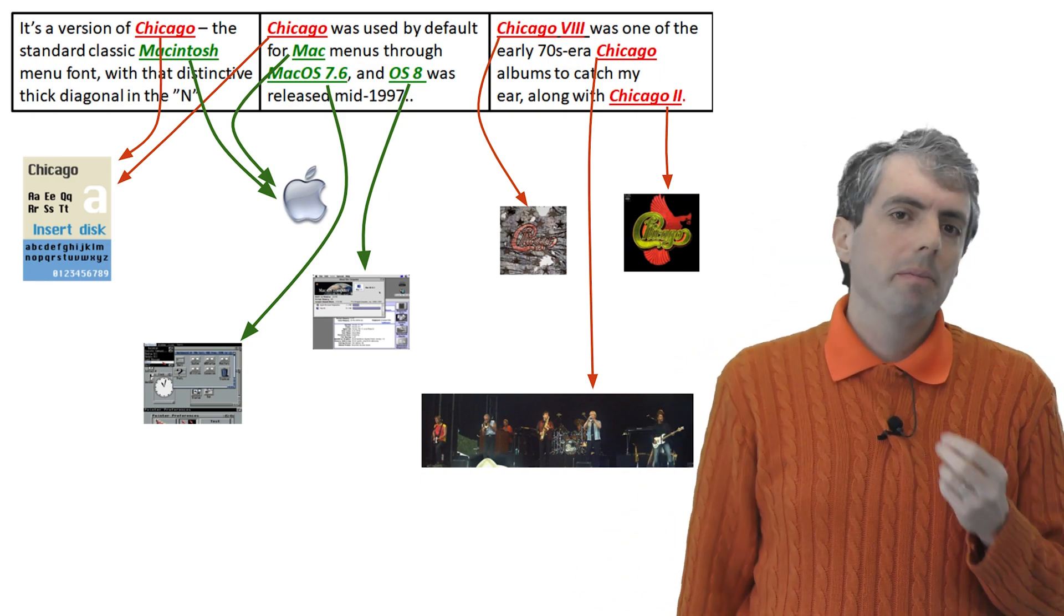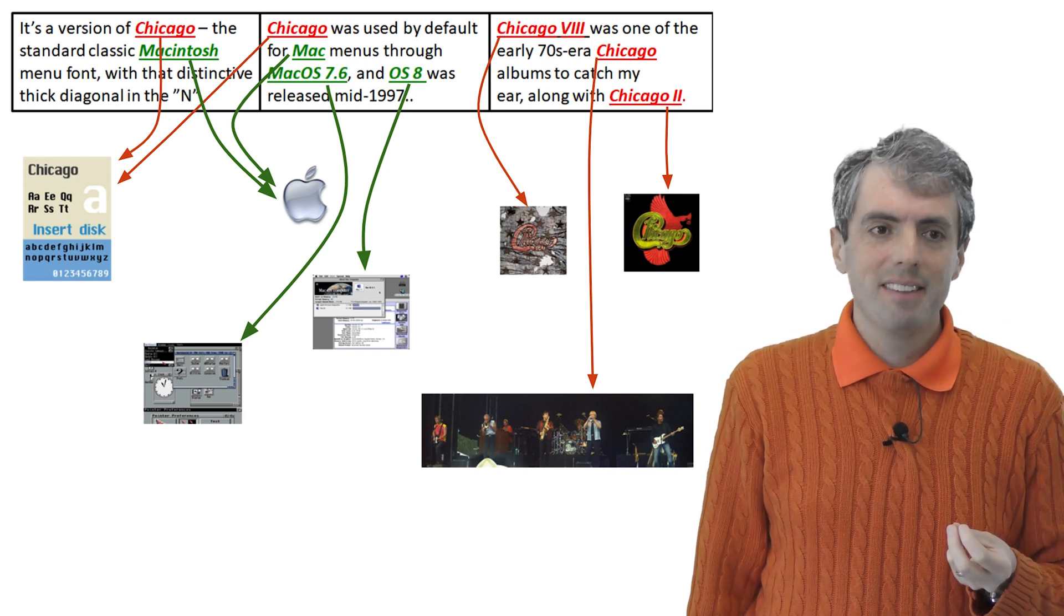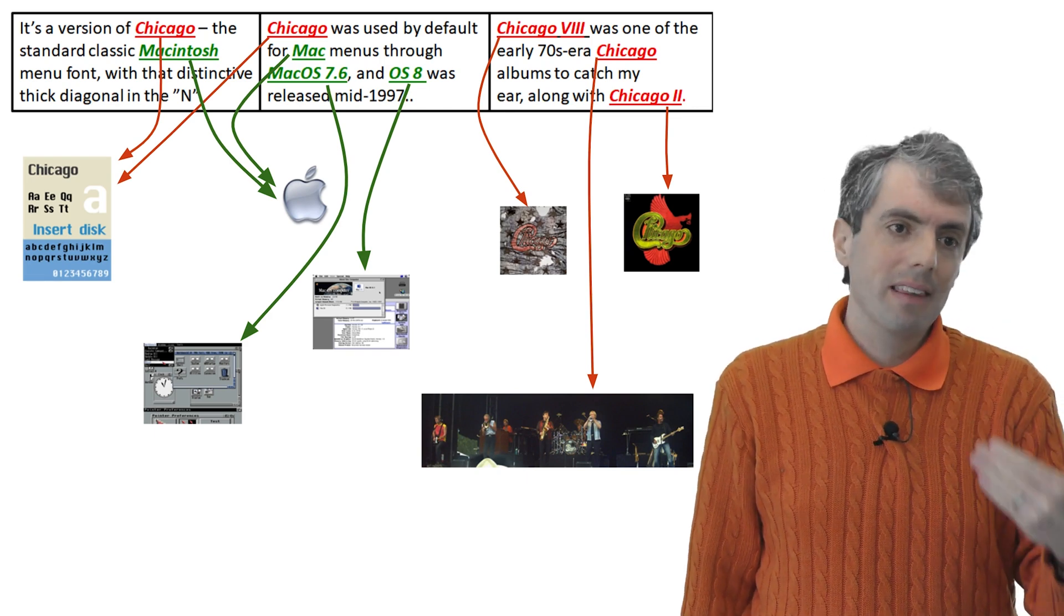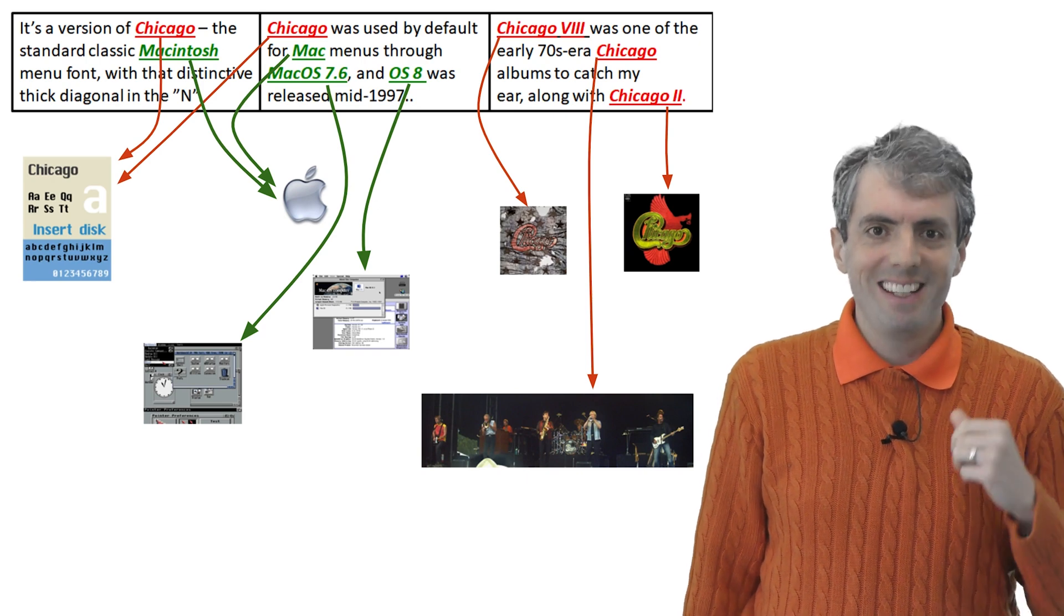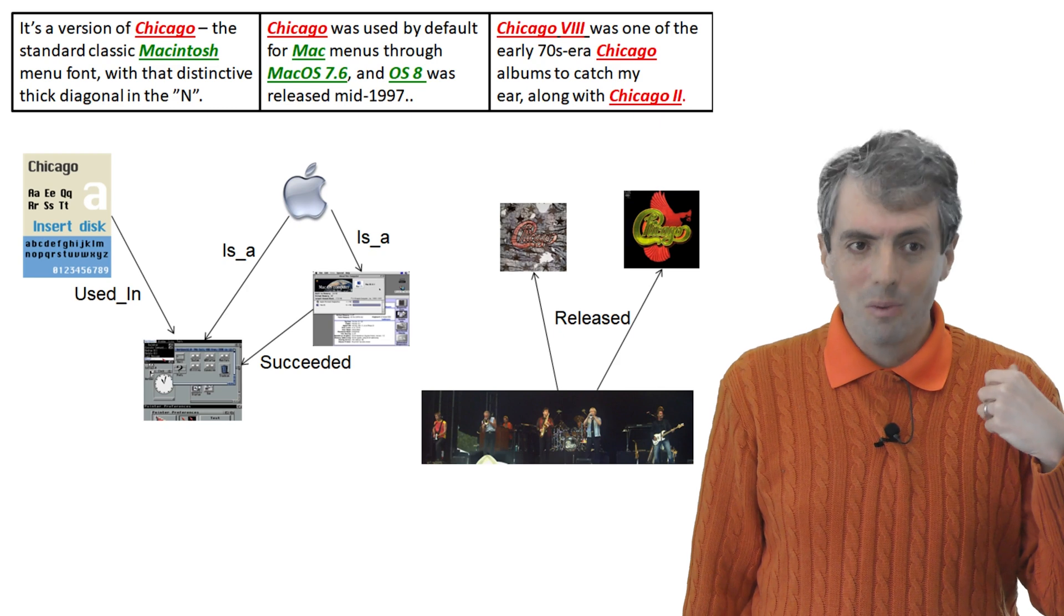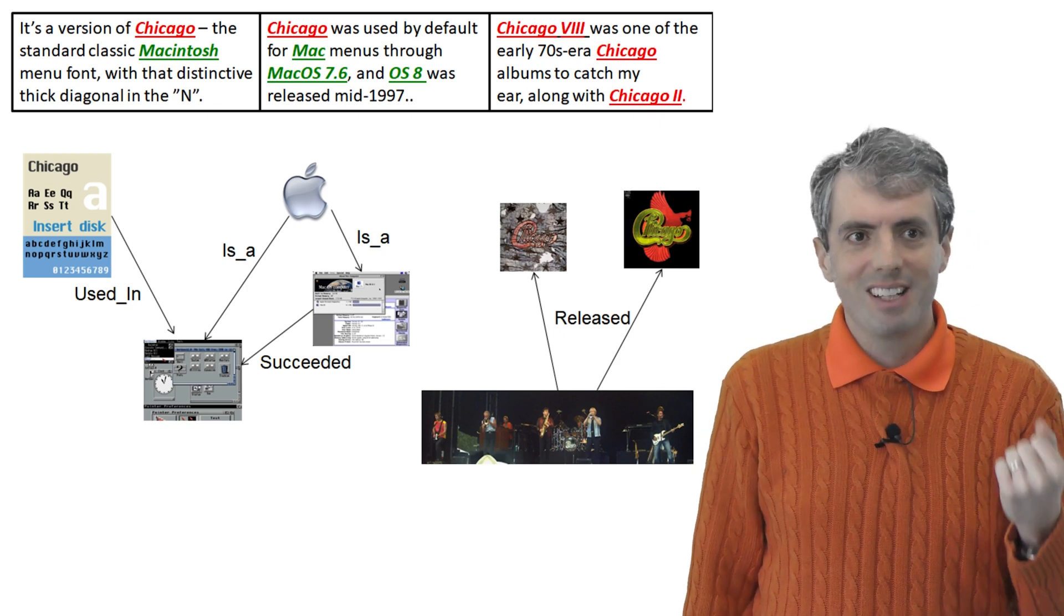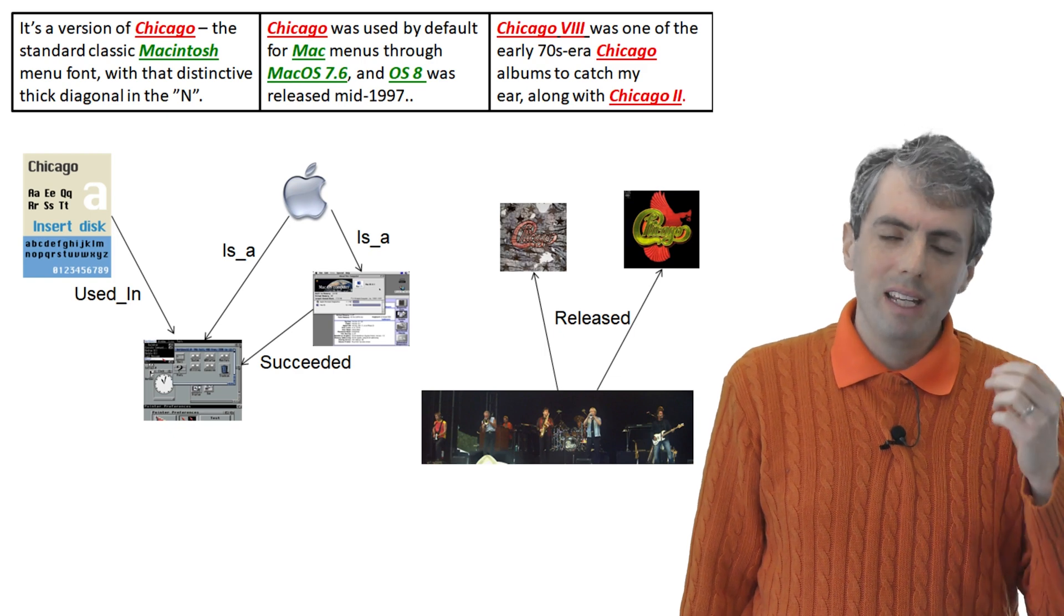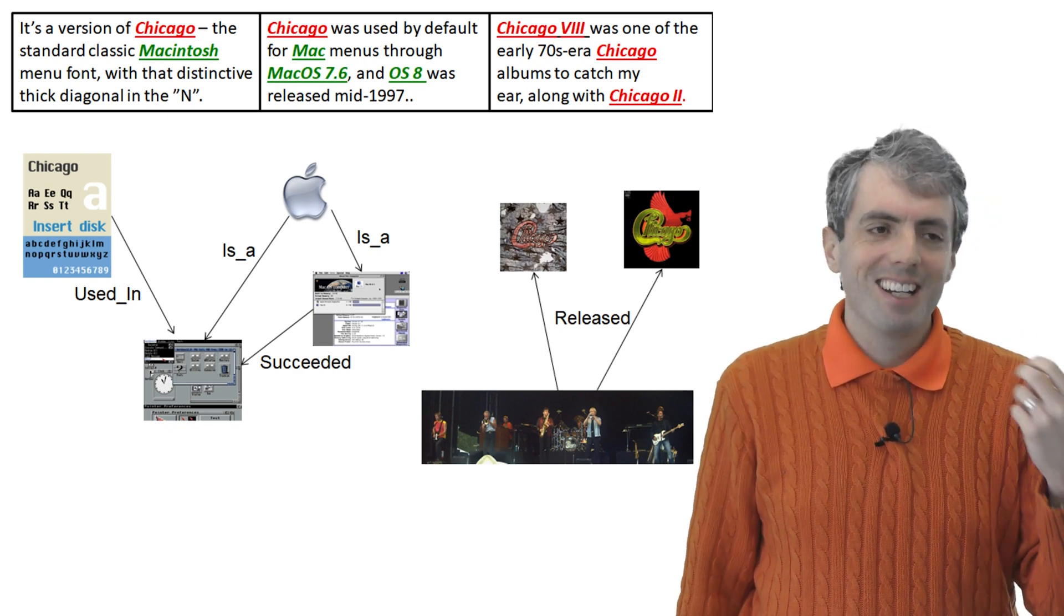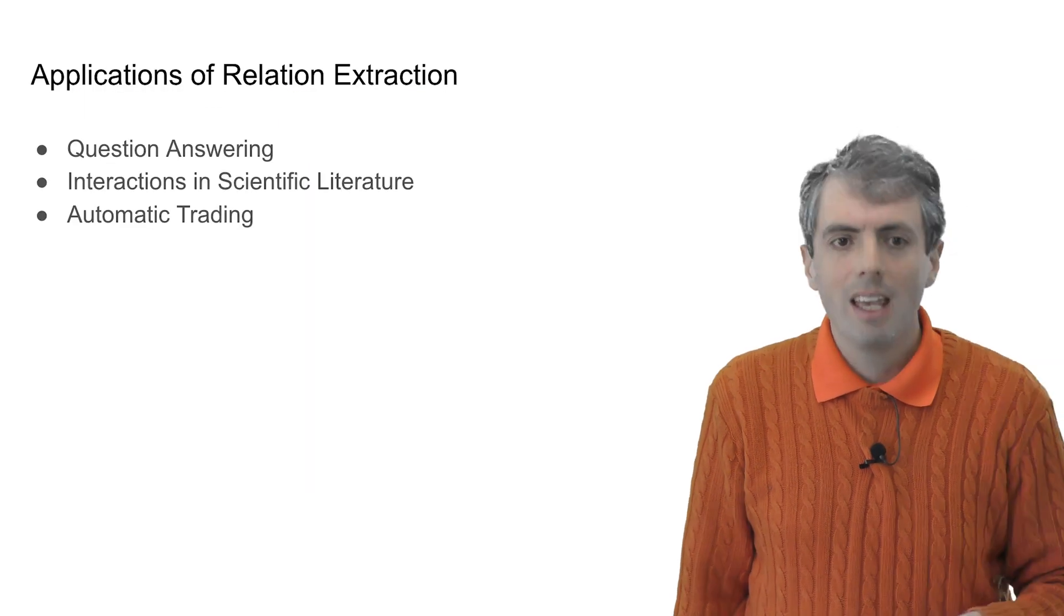If we want computers to really understand the text of these documents, we also need to extract the relationships between the entities from the text. So can we learn that Chicago the band released the album Chicago 8? Can we learn that the Chicago font is used in?